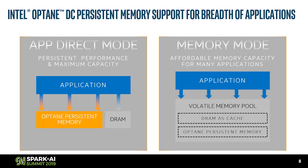Intel Optane DC Persistent Memory can be configured into two modes. We have App Direct Mode, which you can use to directly take advantage of Persistent Memory. We also have Memory Mode, in which the Optane memory is transparently exposed to the operating system as simply more memory — a volatile pool combining DRAM as a cache with the larger Optane underneath. In Spark, we are going to use App Direct Mode, which allows us to directly modify the application to use a Persistent Memory location instead of DRAM, so we can control data placement effectively.